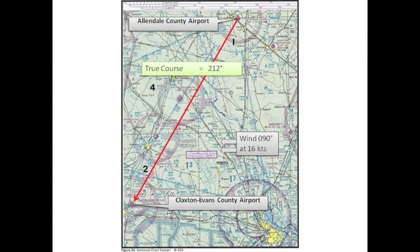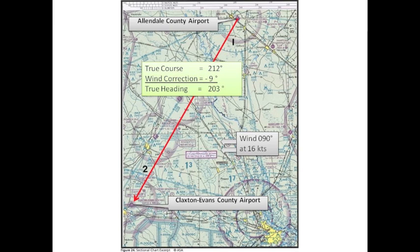A true course of 212 degrees minus a wind correction angle of nine degrees equals a true heading of 203 degrees.